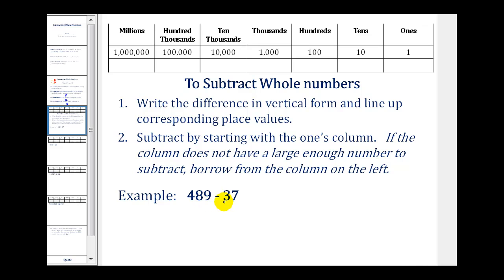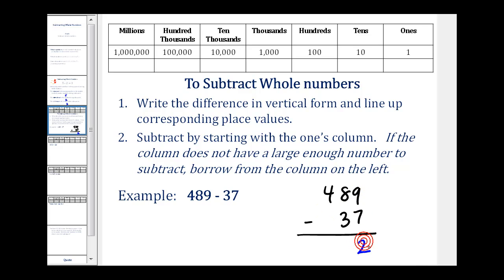Let's look at an example: 489 minus 37. When we write 37, we put the three under the eight in the tens column and the seven under the nine in the ones column. Now we subtract starting on the right: nine minus seven is two, eight minus three is five, and then we have the four in the hundreds column. So our difference is 452 — 489 minus 37 equals 452.